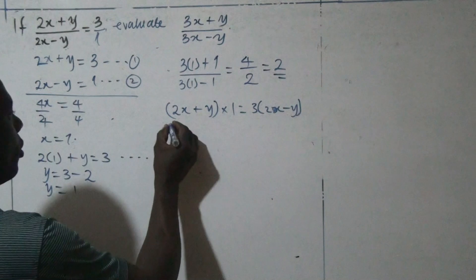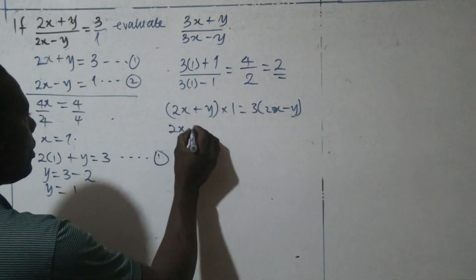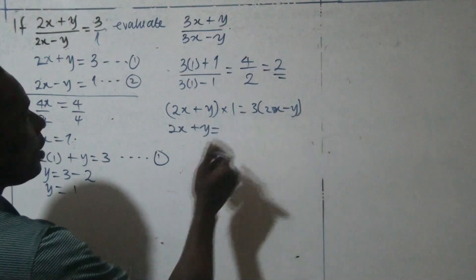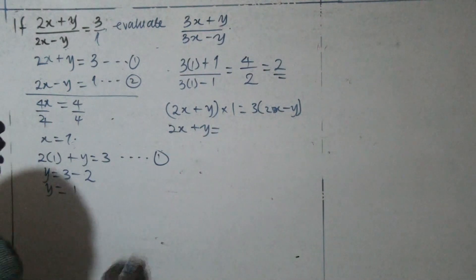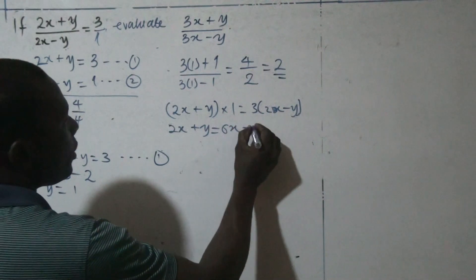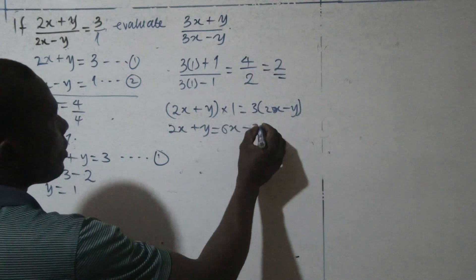So, here, this becomes 2x plus y. With this equal 3, over this expression, it becomes 6x minus 3 times minus y is minus 3y.